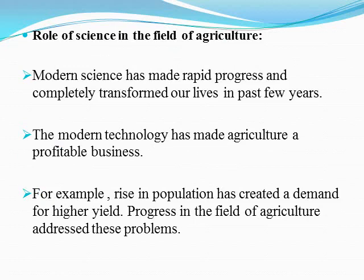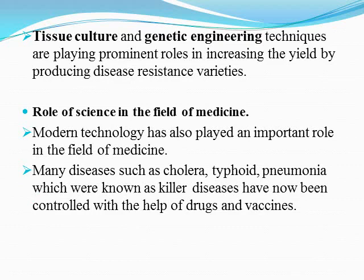First we study the role of science in the field of agriculture. Modern science has made rapid progress and completely transformed our lives in the past few years. Modern technology has made agriculture a profitable business. For example, the rise in population has created a demand for higher yields. Progress in agriculture has addressed these problems, as the quality and quantity of food have both been improved due to modern technology.